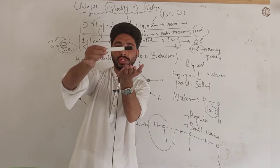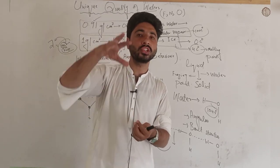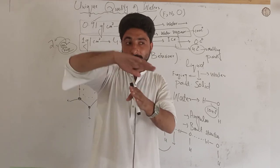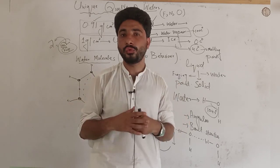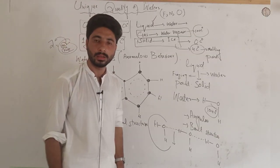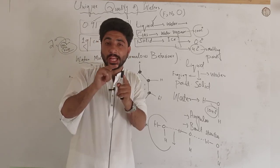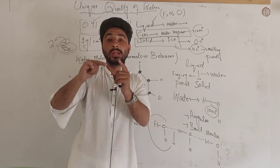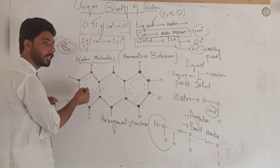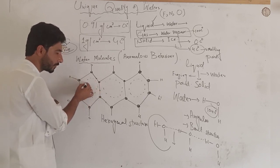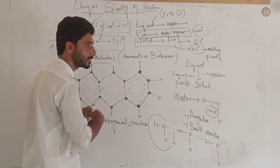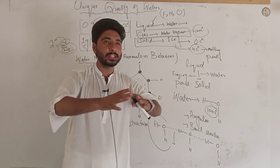The water — that is, ice — is floating due to the anomalous behavior, due to the unique quality of water, due to the hexagonal structure of water. In the hexagonal structure, the molecule arrangement forms a hexagonal pattern. In the solid ice form, the molecules are in a hexagonal structure, and there is empty space inside that structure.